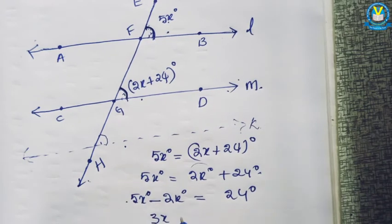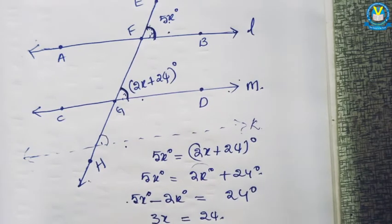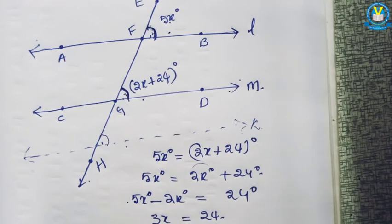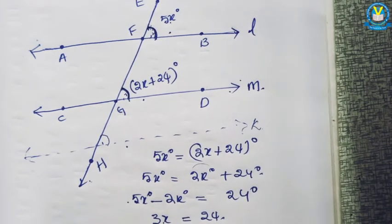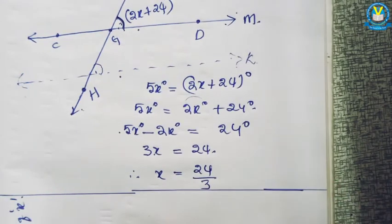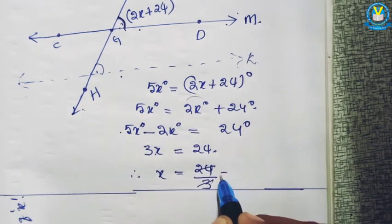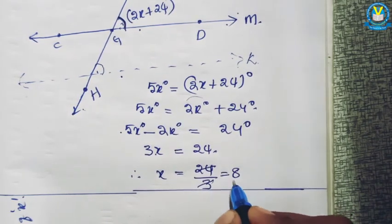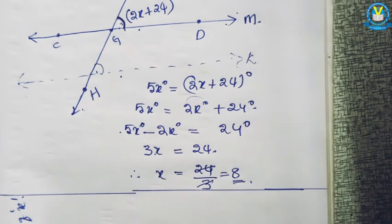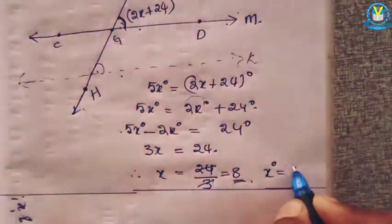3x equals 24. So 3x equal to 24. x equals 24 by 3 — because 3 multiplies, after moving this side it divides. Our aim is to find the value of x degrees. So x degrees equal to 8 degrees.